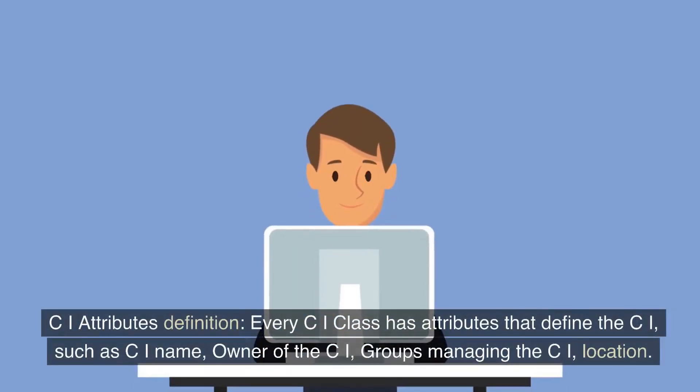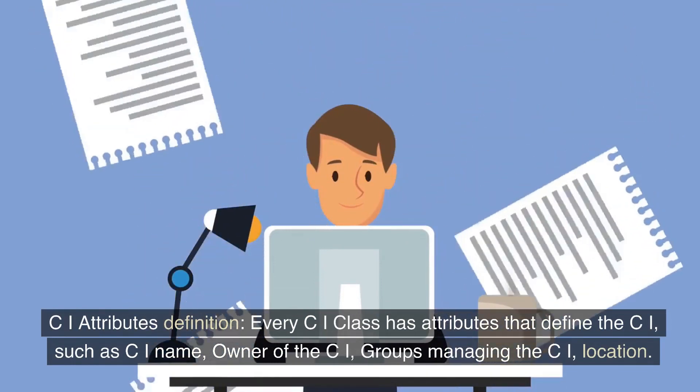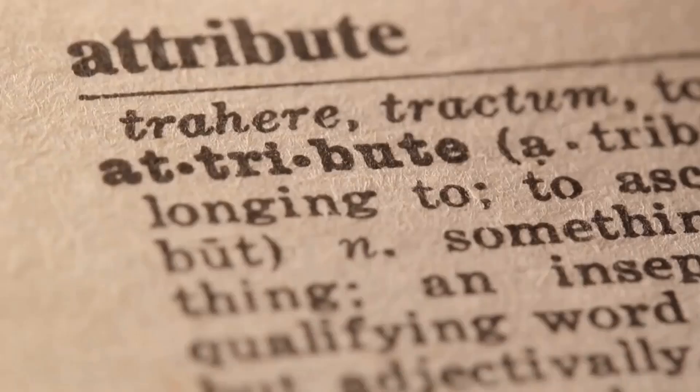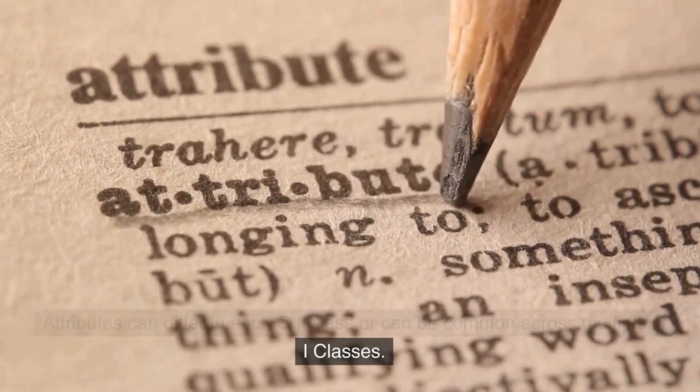CI attributes definition. Every CI class has attributes that define the CI, such as CI name, owner of the CI, groups managing the CI, location.